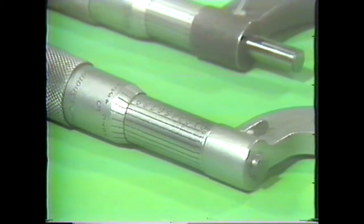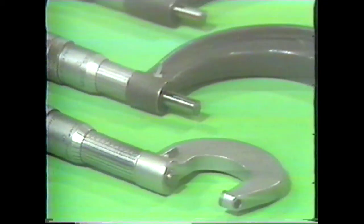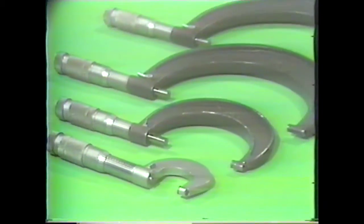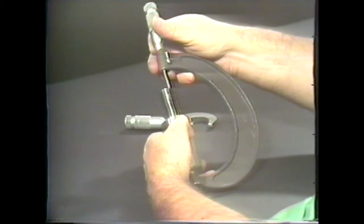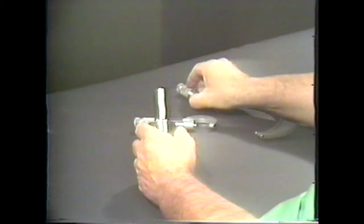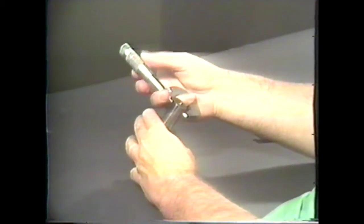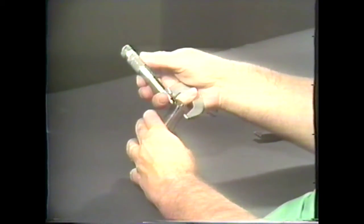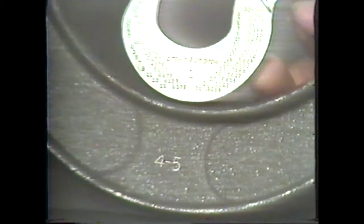Micrometers can only measure over a distance of one inch. This is why the frames have to be designed to accommodate a wide array of sizes. For example, to measure a part between four and five inches, you would choose a four to five inch micrometer. Similarly, for a part of less than one inch, you would choose a zero to one inch micrometer. You will see the size range of each micrometer stamped on the frame.